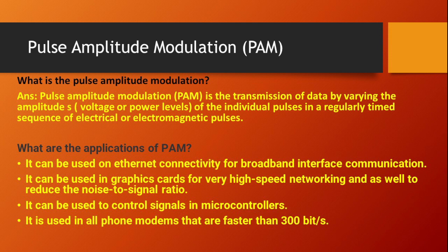What is pulse amplitude modulation? Pulse amplitude modulation is the transmission of data by varying the amplitudes, voltage, or power levels of the individual pulses in a regularly timed sequence of electrical or electromagnetic pulses.